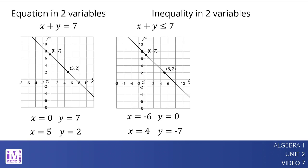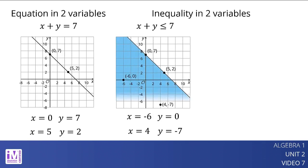If we plot a few other pairs that make the inequality true, such as negative 6 comma 0 and 4 comma negative 7, we see that these points fall on one side of the line. In contrast, pairs that make the inequality false fall on the other side of the line. We can shade that region on one side of the line to indicate that all points in it are solutions.